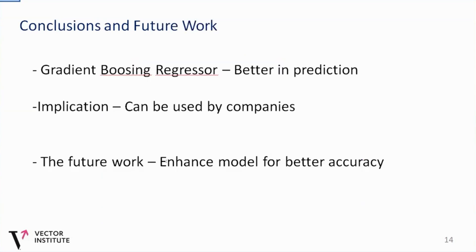In conclusion, we can see from our study that the gradient boosting regressor actually works well and outperformed other models in prediction. And the implication of this study is that companies, insurance companies, can continue or can use this particular model for prediction, which can give them a good degree of accuracy. And of course, the future work is to see how we can enhance the model for better prediction accuracy.